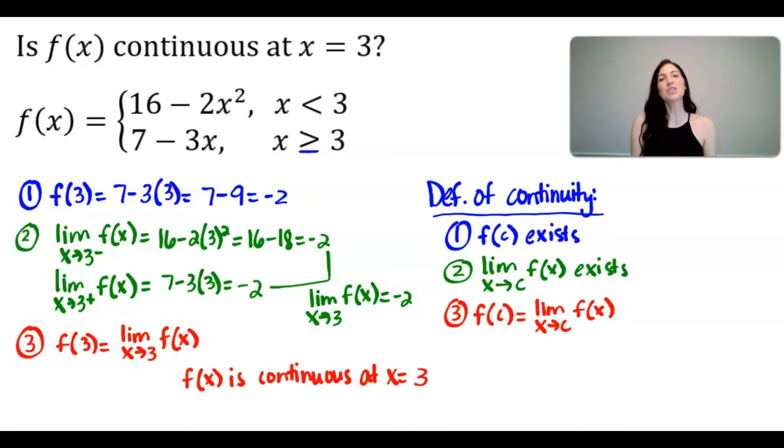And so I'd like to show you what this means on a graph. So if I were to sketch a graph here, in the first step we determined that f of 3 was negative 2. What that means is that at the x value of 3, the value of the function is negative 2. Therefore there's a point there.